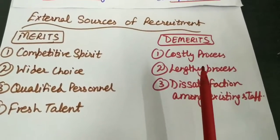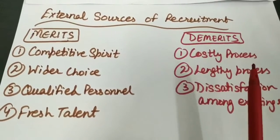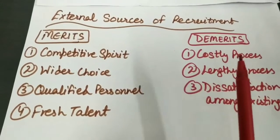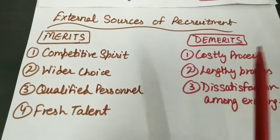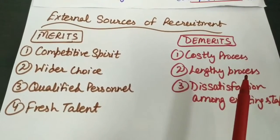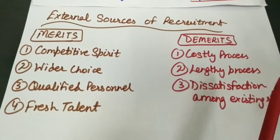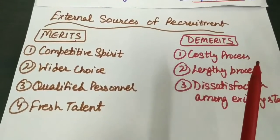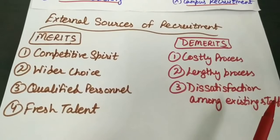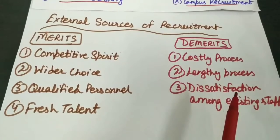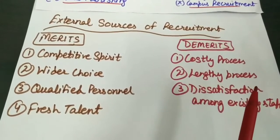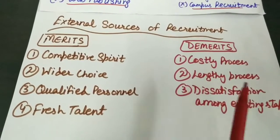Now let us discuss the demerits of external sources of recruitment. First is costly process - external source is a costly process because a huge amount is involved, and a lot of money has to be spent on advertisement and processing of applications. Next demerit is lengthy process - recruitment from external sources takes a long time because business needs to notify vacancies and then wait for applications before initiating the selection process. Last demerit is dissatisfaction among existing staff - when we fill job vacancies through external recruitment, it leads to dissatisfaction and frustration among existing employees, as they may feel their chances of promotions are reduced.